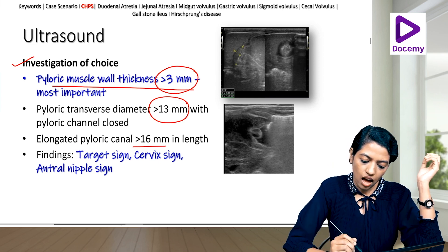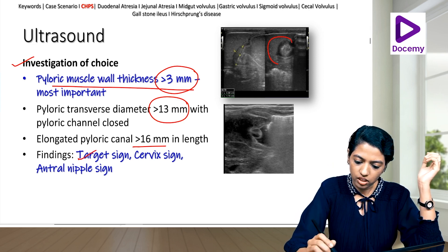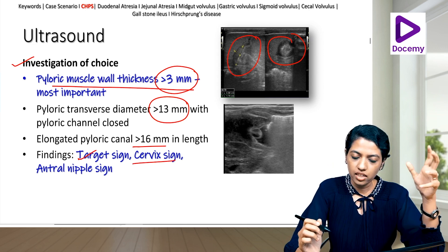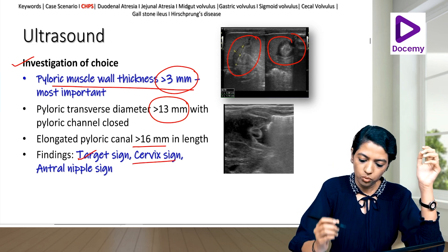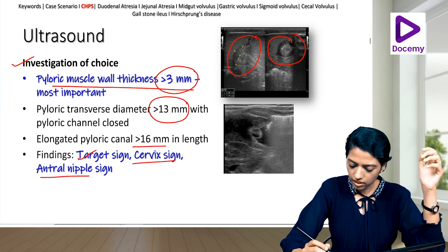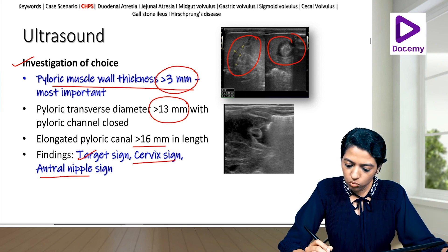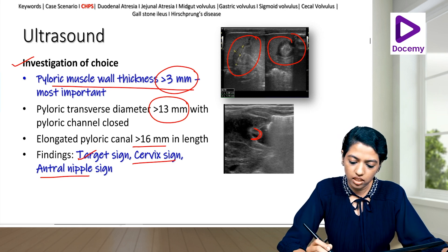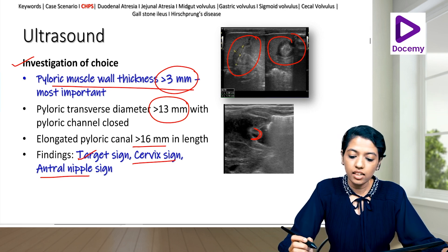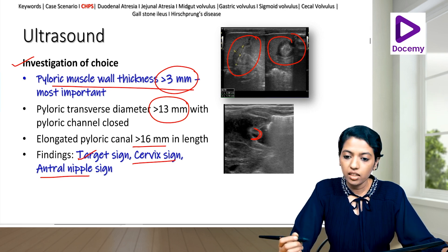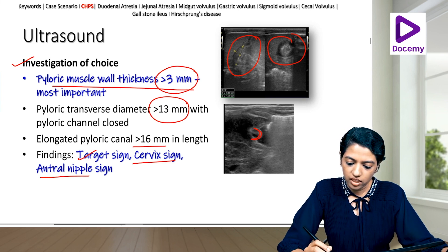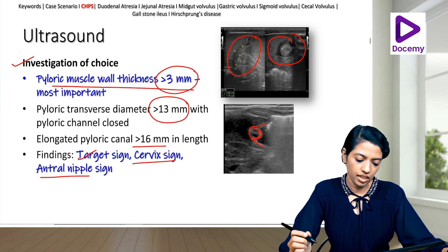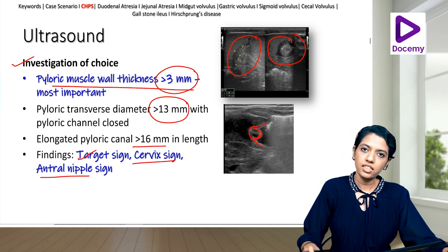Three ultrasound signs in CHPS: the target sign in cross-section, the cervix sign in longitudinal section, and the antral nipple sign — which is the redundant mucosa of the pylorus projecting into the gastric antrum.